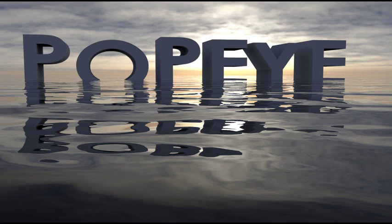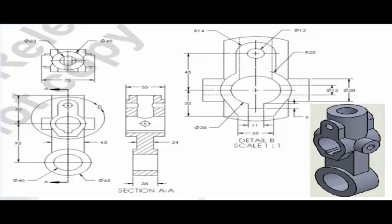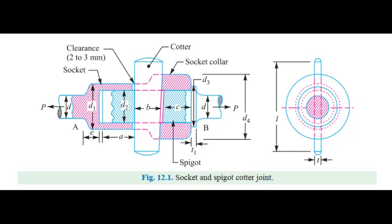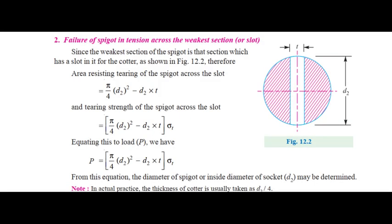Modeling means you have the data — the dimensions of a part — and you're going to take that 2D sketch and make it a 3D model. Designing, on the other hand, means you derive the dimensions using rules; you use those rules to determine the part's dimensions and then make it a 3D model. Every engineer should know that distinction.